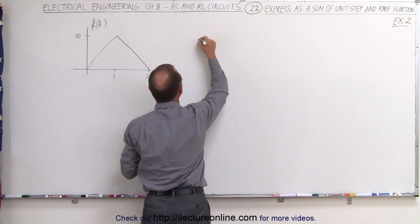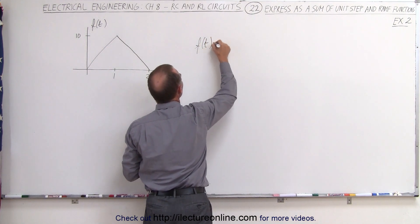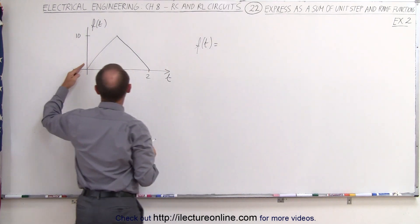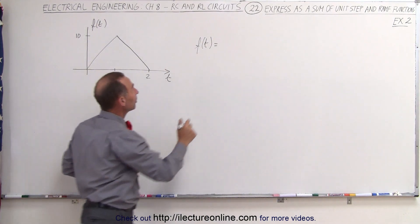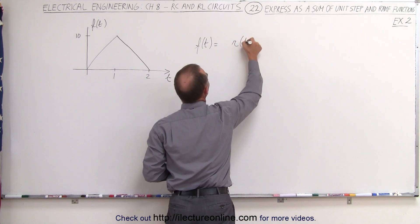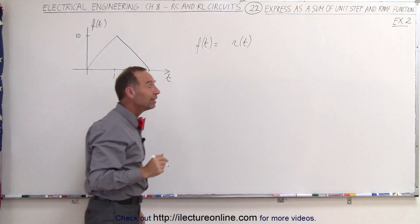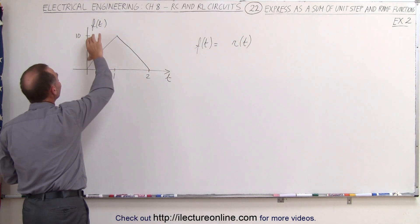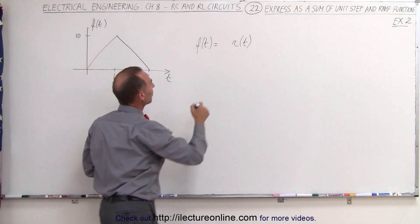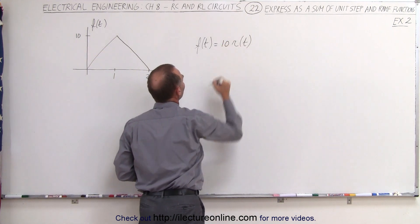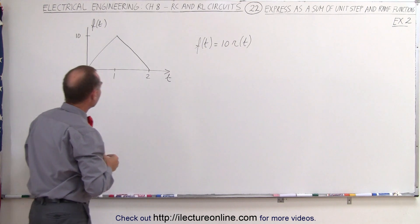So therefore, you can say that the function f is equal to, well, if the slope was equal to one, then it simply would be the RAM function starting at time equals zero. But in this case, the slope is a ten to one ratio, so you need to multiply this times ten.